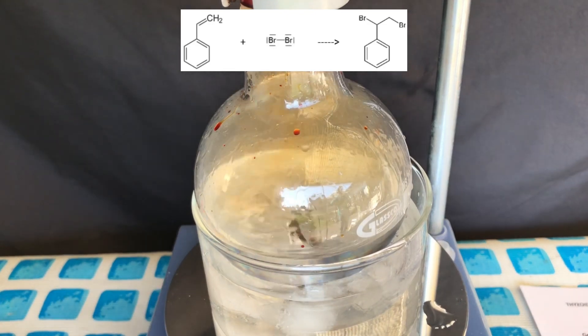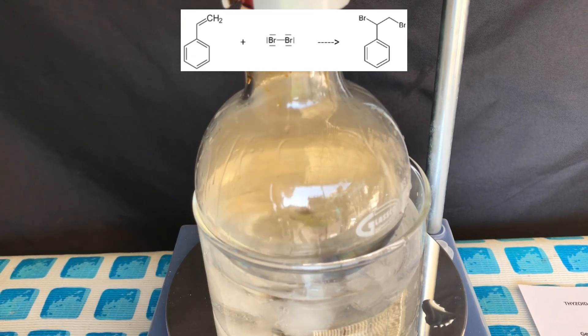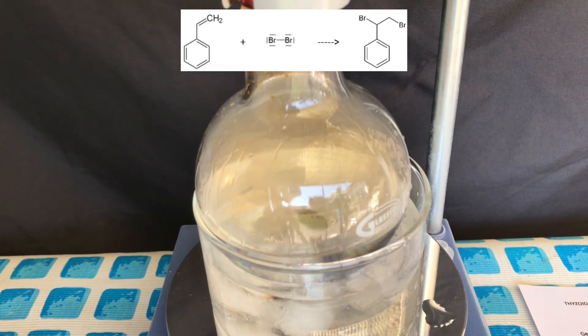This is because an addition reaction between the bromine and the double bond is taking place. No nasty byproduct is formed, but only our 1,2-dibromo-1-phenyl-ethane.